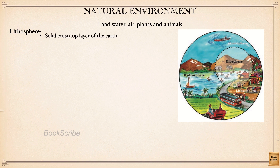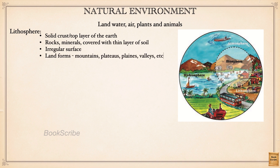The earth's crust is called the lithosphere, and it is made up of rocks, minerals, and soil. The lithosphere is irregular and its surface contains many types of landforms including mountains, plateaus, plains, and valleys. It is found in continents, islands, and also on the ocean bed — the ocean water is not part of the lithosphere, only the ocean bed.